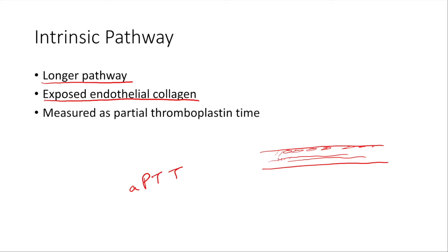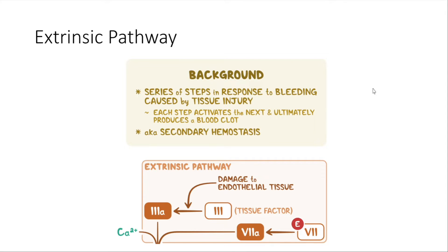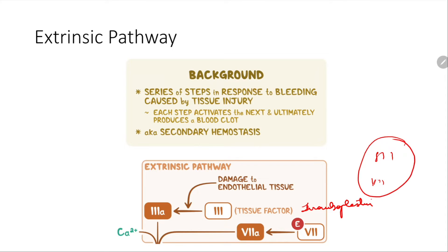Now let's look at the extrinsic pathway — very small, very short, with only two factors involved: factor 3 and factor 7. Damage to endothelial tissue causes activation of factor 3 to factor 3a, which is also known as tissue factor or tissue thromboplastin. Factor 7 gets activated into factor 7a, and these two combine with calcium ions to enter the common pathway.